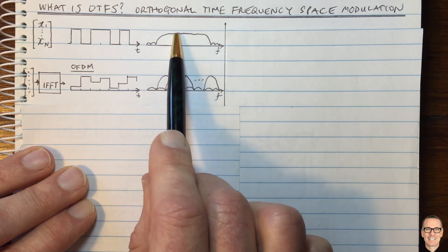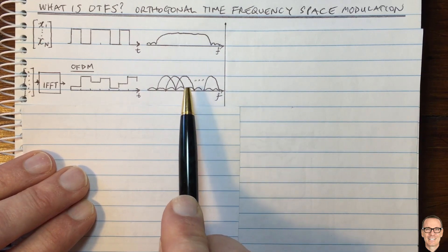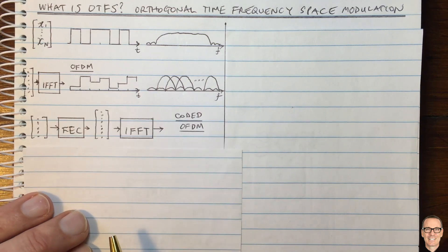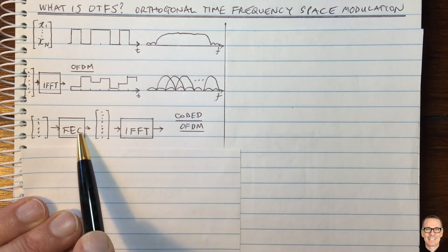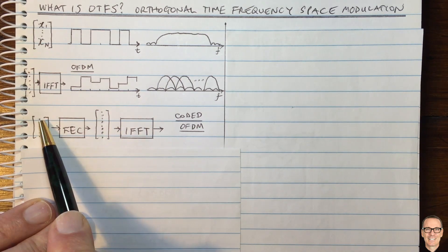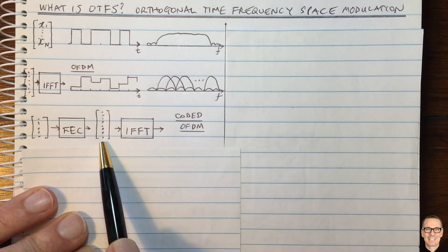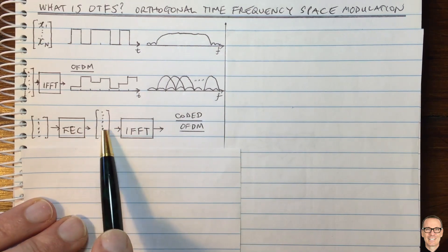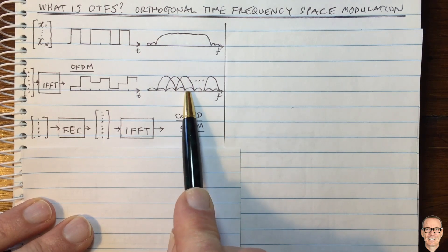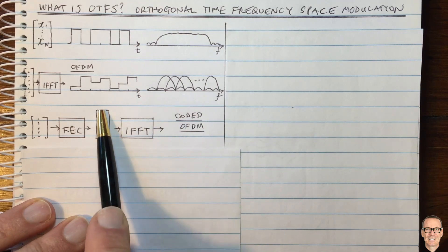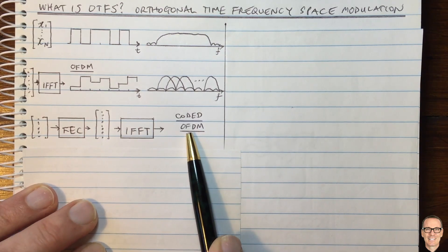But you still have a problem: if one of the subchannels gets totally knocked out, it will have a high bit error rate. This is where we introduce coding — coded OFDM. We take our input data, put it through forward error correction coding to get a longer sequence, where each data element spreads across multiple subchannels. So if one subchannel gets knocked out by the channel, we can recover the information from the others. But what if you have a time-varying channel?